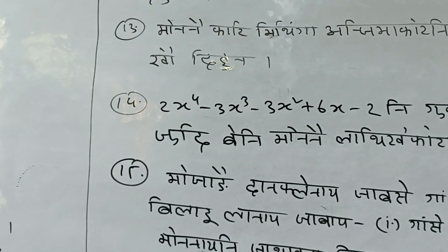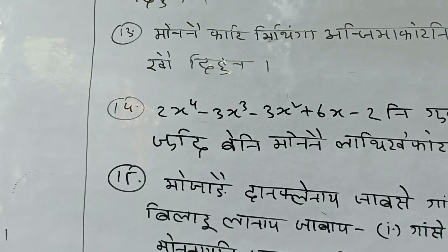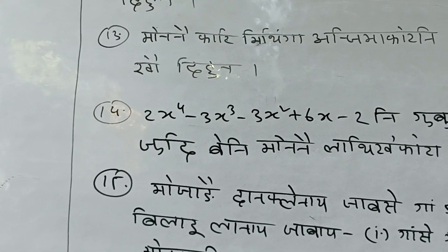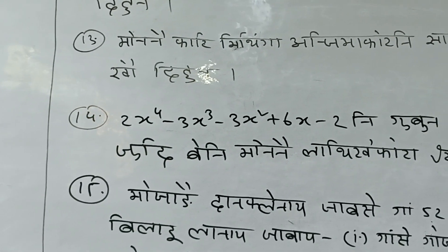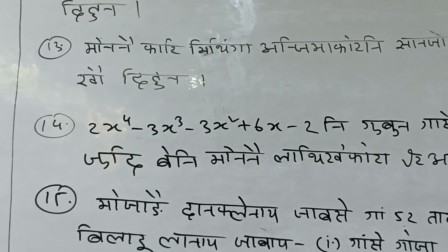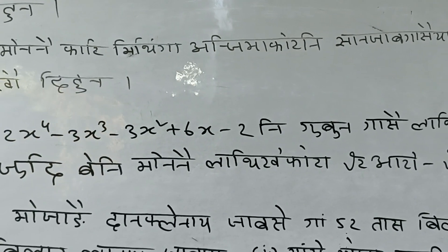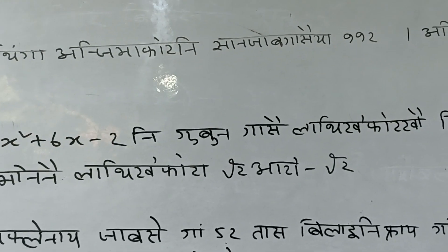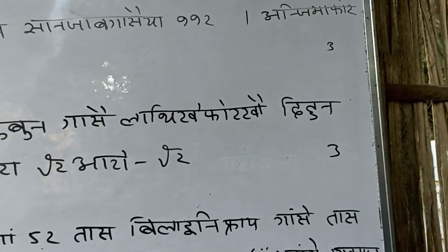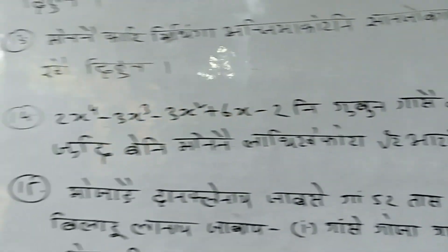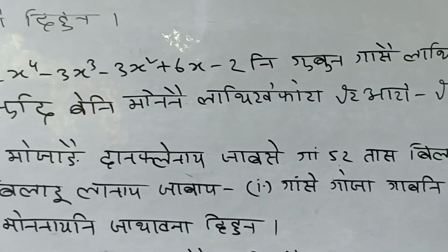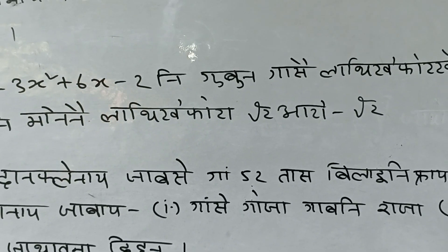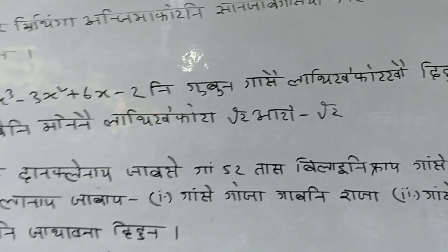Number 14: twice x to the power 4, minus thrice x cubed, minus thrice x squared, plus 6x. Find the factors. Given that root 2 and minus root 2 are roots.